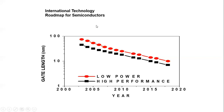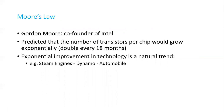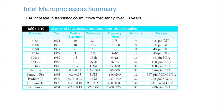Moore's Law: when Gordon Moore, co-founder of Intel, worked with his colleagues, he realized that when they scaled things it took 18 months to double the number of transistors. It is a natural trend observed in transistors. That is called Moore's Law.